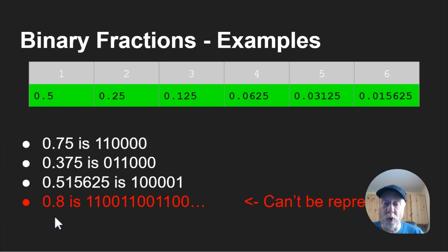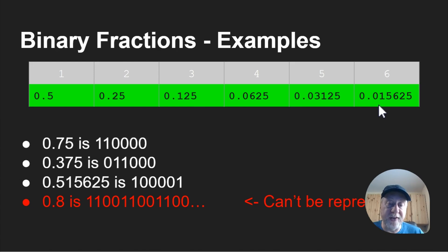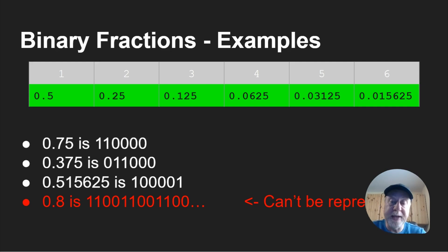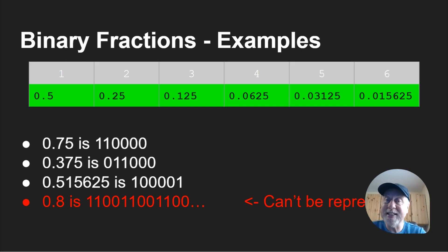Of course there are other numbers you might want. For 0.8 you need 0.5, then 0.25 gets you closer, then you don't need 0.125 or 0.0625, but you add in 0.03125, 0.015625, and in fact it keeps going. Just like dividing 1 by 3 in decimal gives 0.333... recurring, in binary this number doesn't end — it's a repeating pattern 1 1 0 0 1 1 0 0 going on to infinity. So not all numbers can be precisely encoded into a binary fraction — this is where the sting in the tail starts.